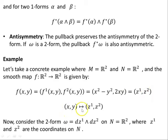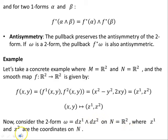So we are mapping (x,y) to (Z1, Z2): x, y are coordinates on manifold M and Z1, Z2 are coordinates on manifold N. Now consider the two-form omega = dZ1∧dZ2 on N = R², where Z1 and Z2 are coordinates on N. This is our two-form.